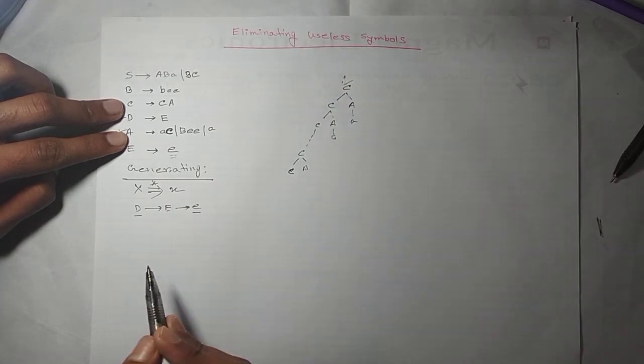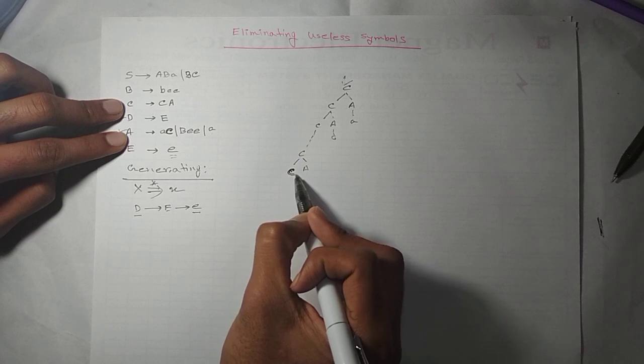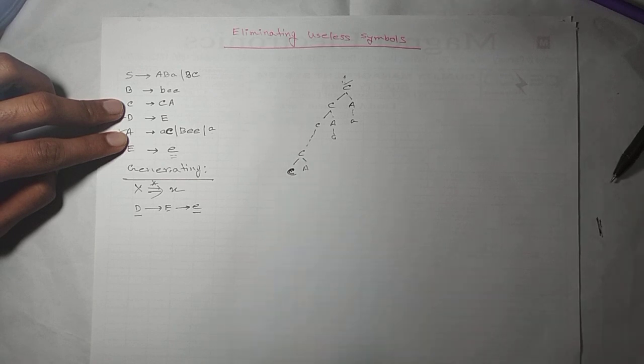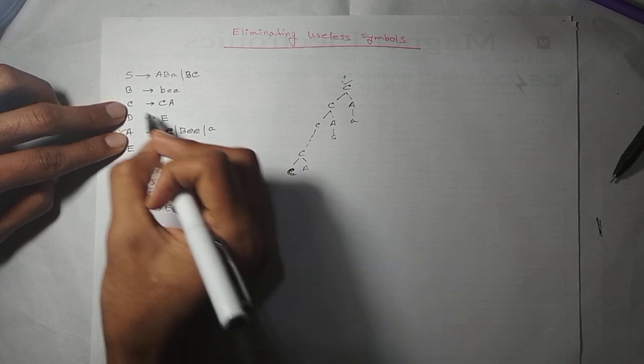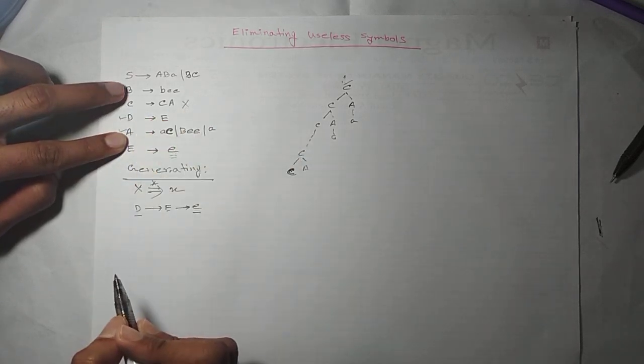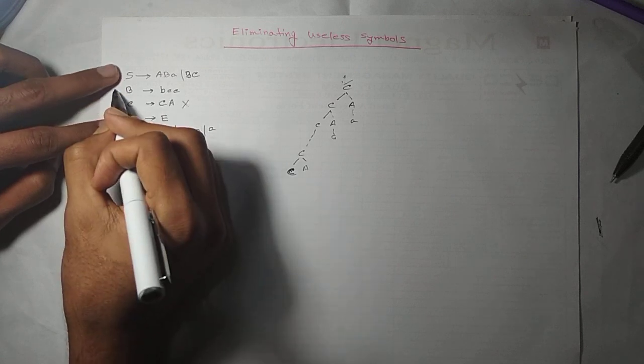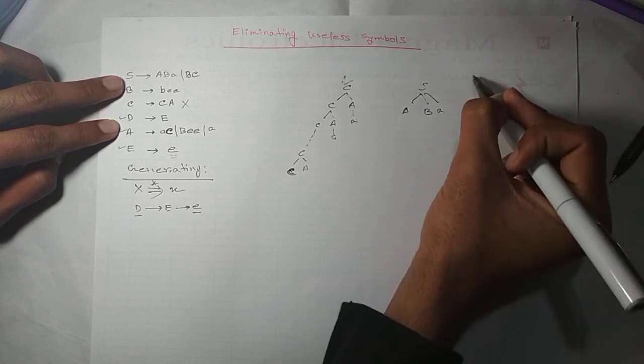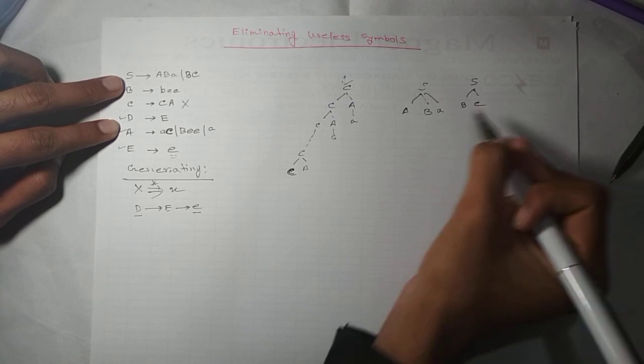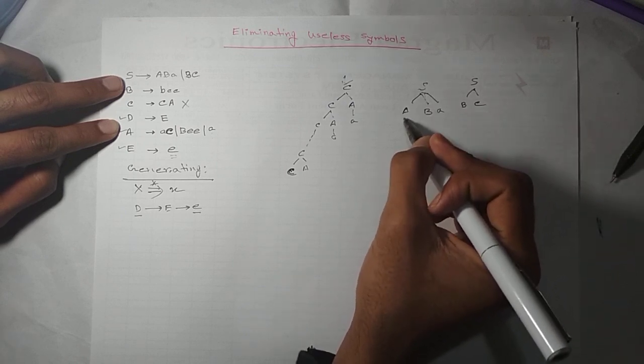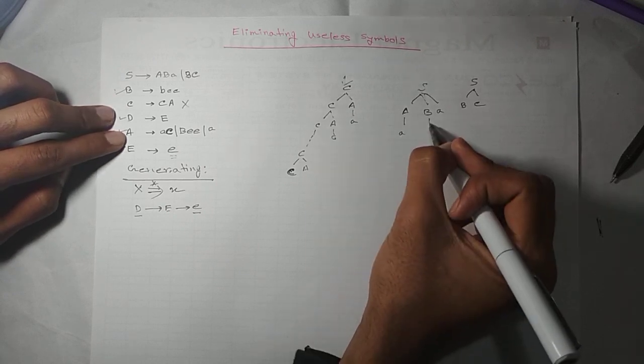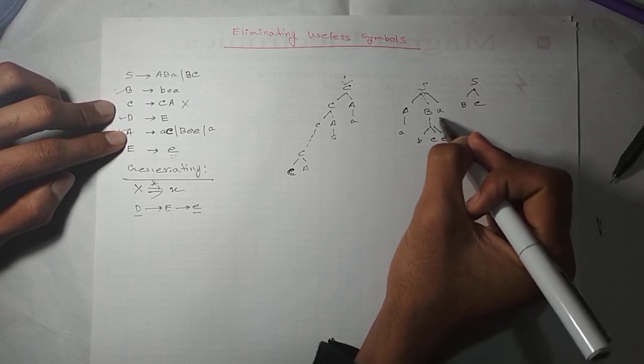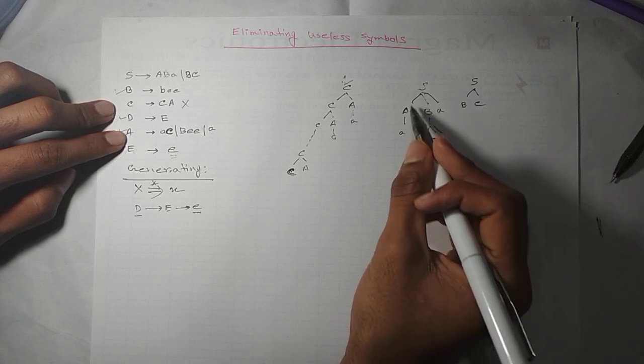This is non-generating. If we look at the generating symbols, we can identify them. For example, if we have productions with A, B, C, then we need to check which symbols can generate terminal symbols.